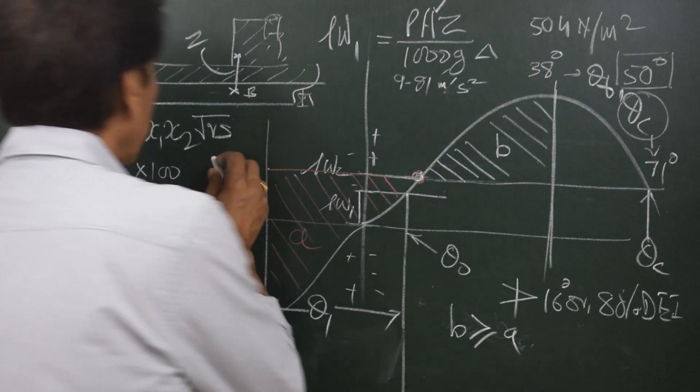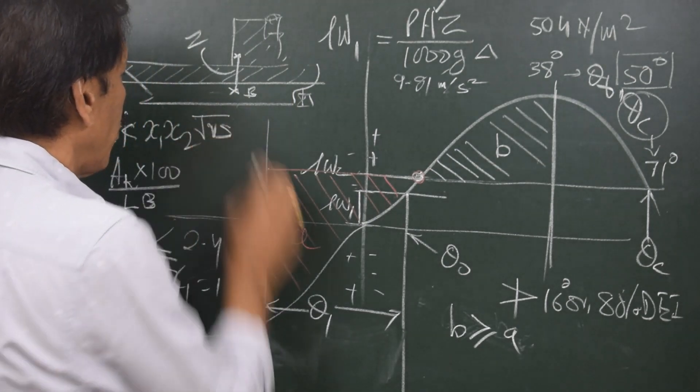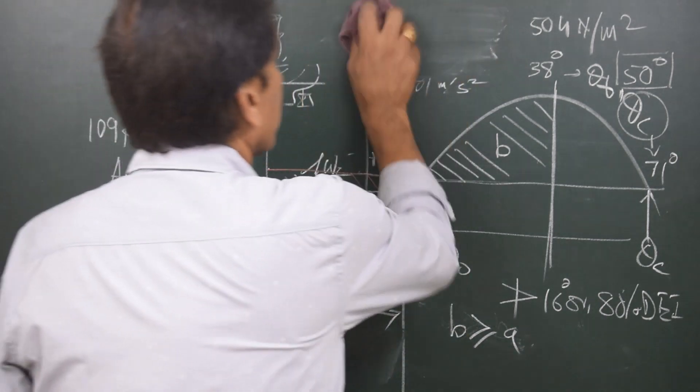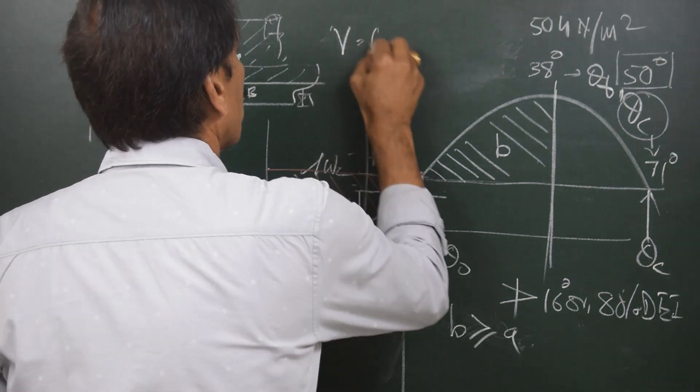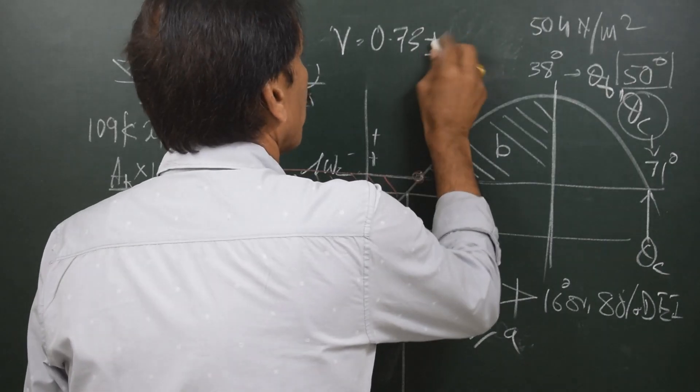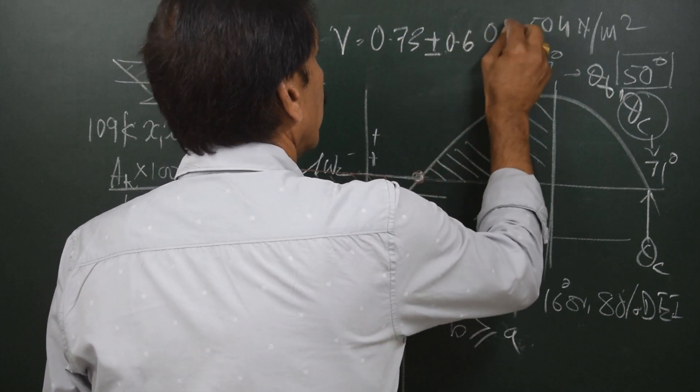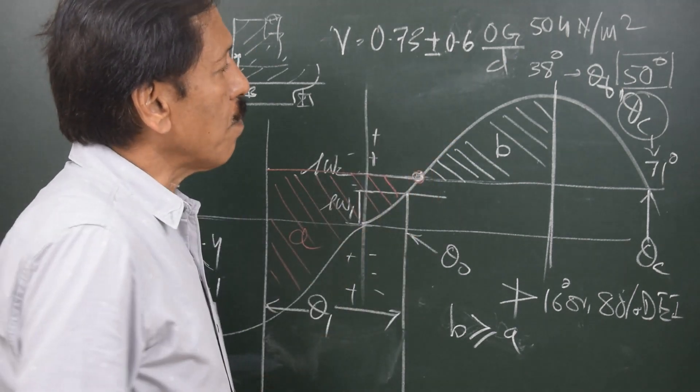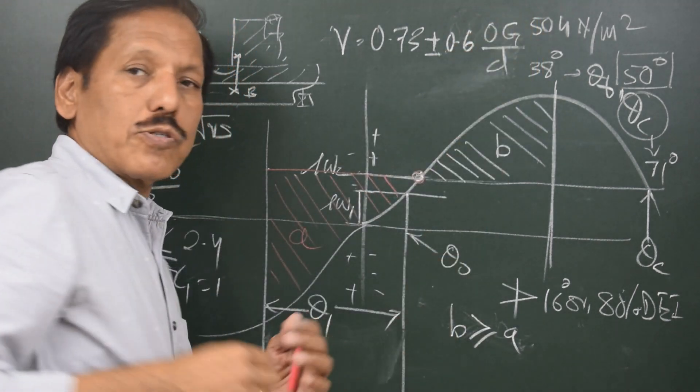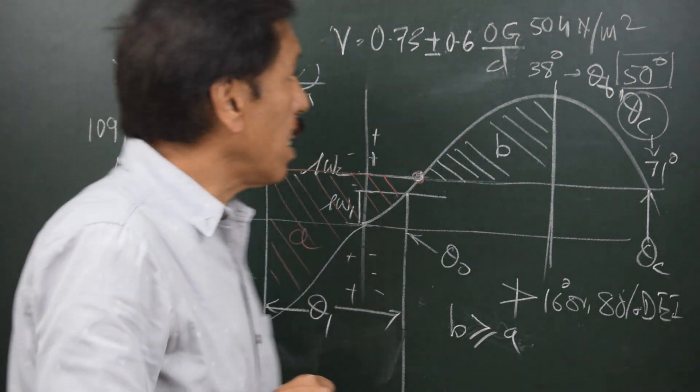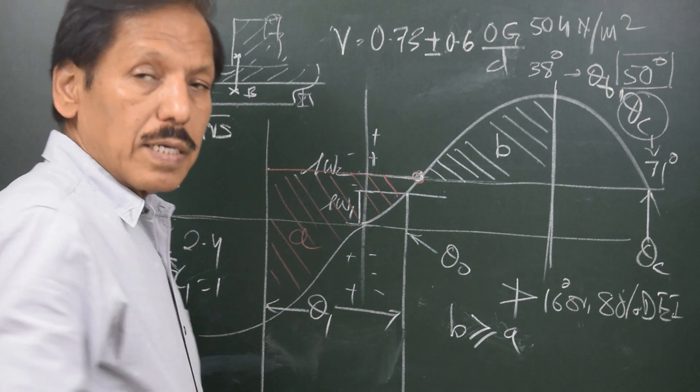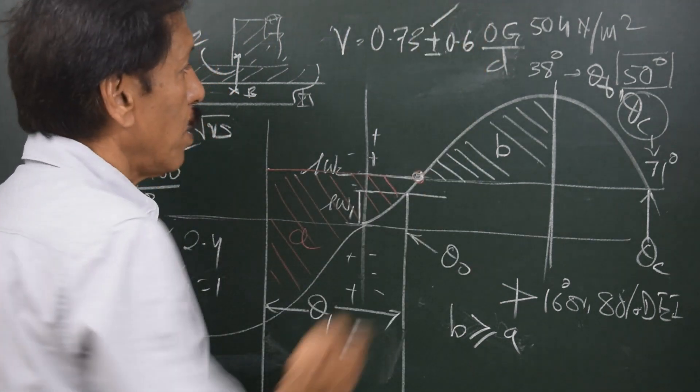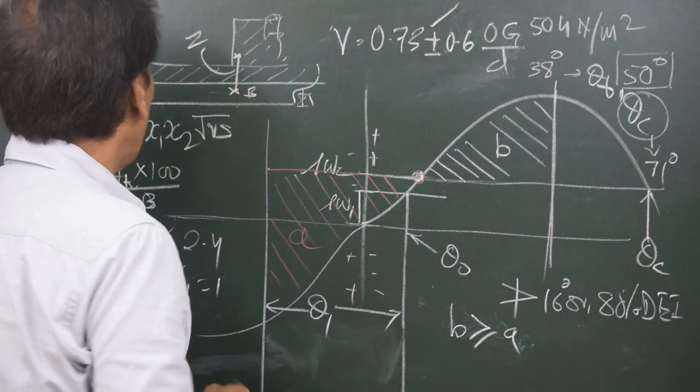Now the other thing which remains is the value of R. Value of R is equal to 0.73 plus or minus 0.6 into OG upon D. So D is the mean draft of the ship. OG is the distance from center of gravity of the ship to the waterline. If the center of gravity is above the waterline, then we have to use plus sign. And if the center of gravity is below waterline, we have to use minus sign. So this is how you will get the value of R.